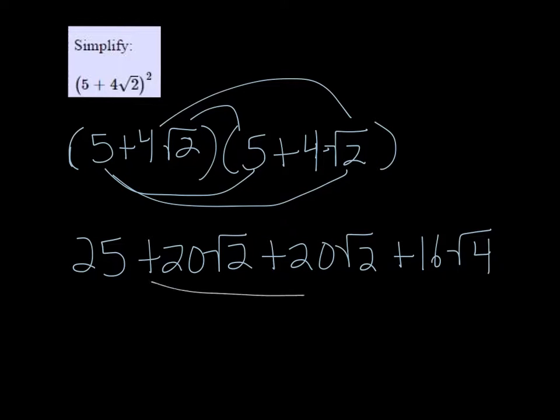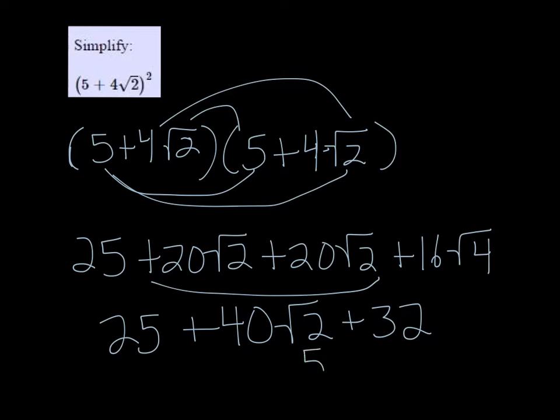So we can combine the like terms in the middle and get 40 root 2, and then 16 times square root 4 would be 16 times 2, so that's 32, and 32 and 25 is 57, so we get 57 plus 40 root 2.